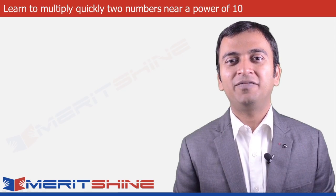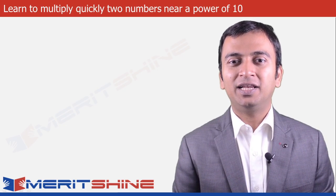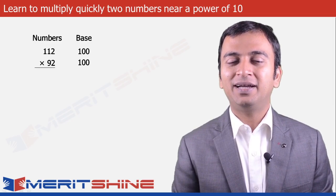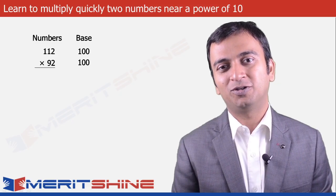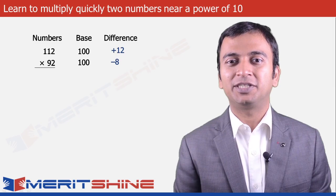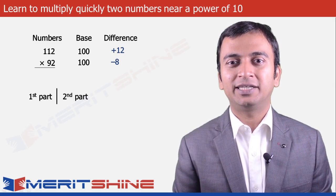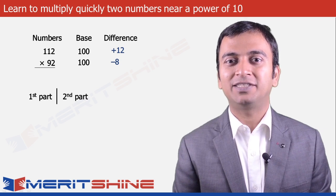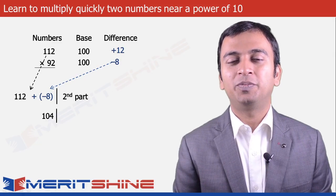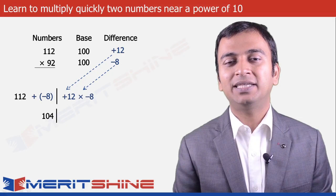Let us now take an example where one of the numbers is greater than the base and the other less than it. 112 into 92 is one such example. The chosen base again would be 100, and the differences would be plus 12 and minus 8. The first part would be 112 added to the difference from the second, which is minus 8, giving us 104. The second part would be the product of the differences, which is 12 into minus 8, giving us minus 96.